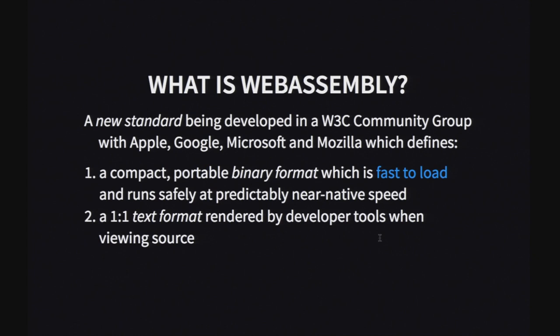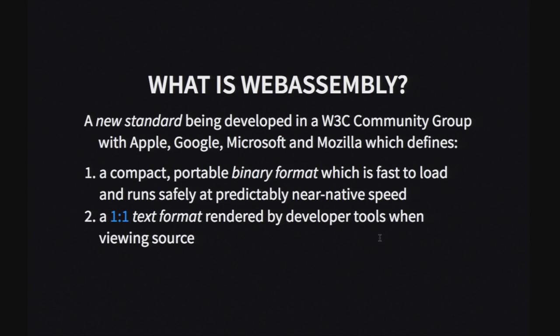We want it to be fast to load — it's a lot faster to decode a binary format than to parse JavaScript. It has to be safe for the Web; you can't allow reading random bits of memory. It basically has the same security profile as JavaScript. We want it to run predictably at near-native speed so you shouldn't need to be a JavaScript VM engineer to understand the performance of your code. For the text format, one-to-one means we can go back and forth between the binary and text formats — you can get a binary, go to text, make a tweak, add a printf, go back to binary and load that. Viewing source is an important part of the Web, and we want to preserve that.